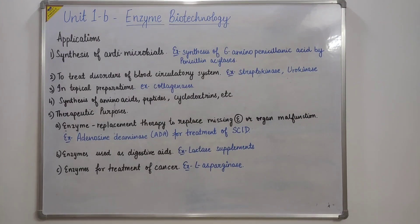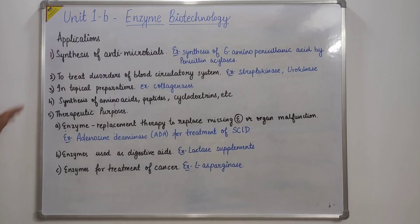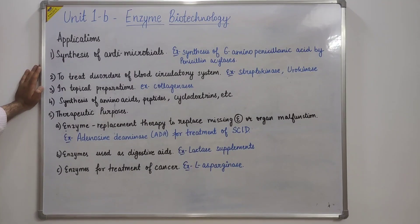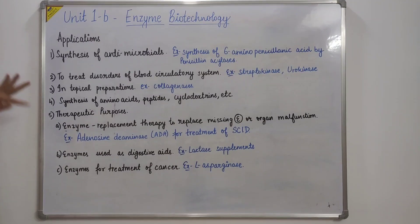Let's see the applications of commercial enzymes. First, synthesis of antimicrobials — for example, synthesis of 6-aminopenicillanic acid by penicillin acylase. Second, treating disorders of the blood circulatory system — for example, streptokinase or urokinase, which dissolve fibrin clots inside the circulatory system. Third, topical preparations — for example, collagenases used in third-degree burns or in patients with diabetic ulcers. Fourth, synthesis of amino acids, peptides, and cyclodextrins.